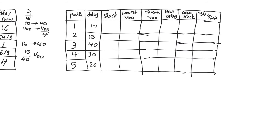Let's repeat this exercise assuming two possible values of power supply: a nominal high value of 1 volt and a low power supply of 0.6 volt. Each path can choose one of these two supply levels but nothing else — it cannot go lower than 0.6 V or pick anything in between. We start again with delays 10, 15, 40, 30, and 20, with original slacks of 30, 25, 0, 10, and 20.